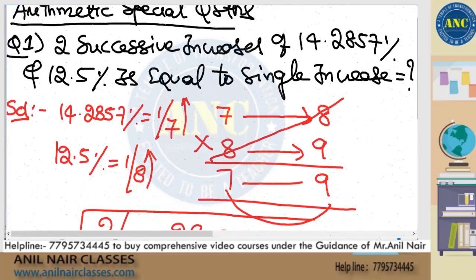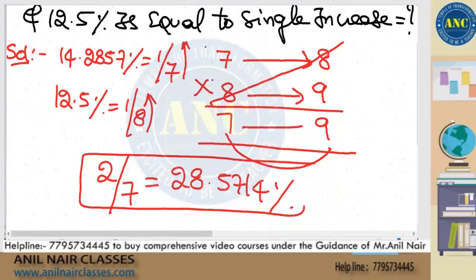Two successive increases of 14.2857% and 12.5%: 14.2857 is 1/7, so on 7, one increase gives 8. 12.5 is 1/8, so on 8, one increase gives 9. Multiplying by the fundamental principle of multiplication, 7 becomes 9 — an increase of 2 on 7, which is 28.5714%.